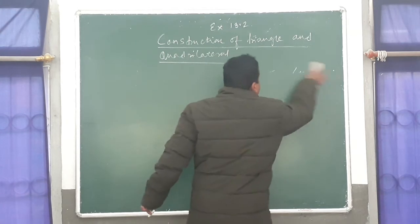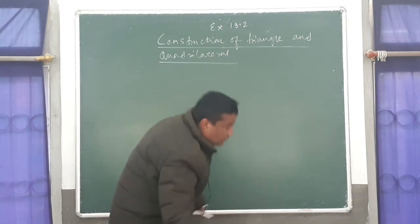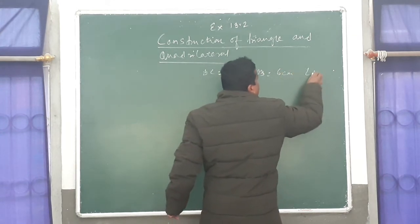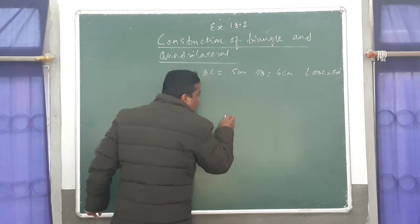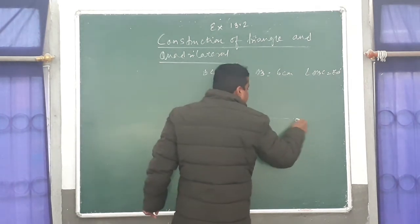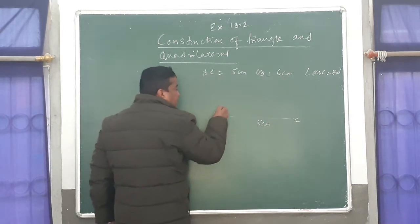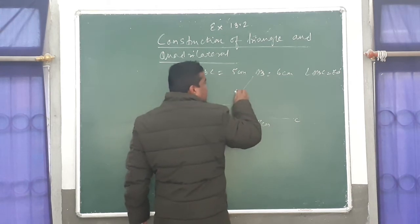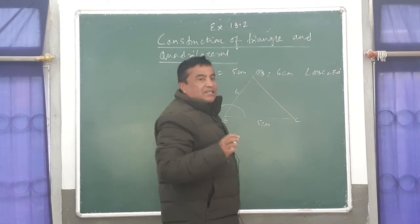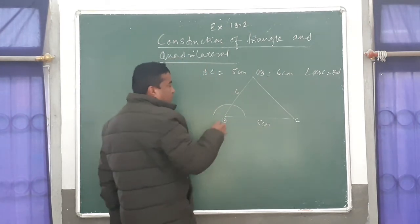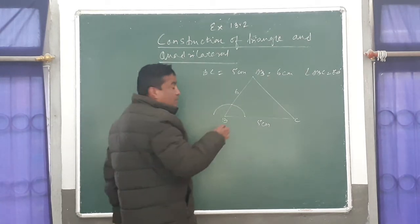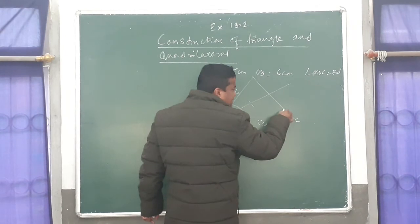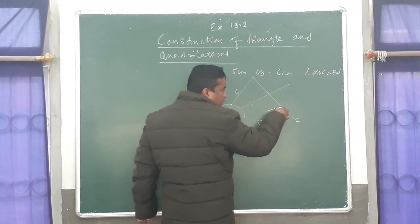Next is the incircle. Incircle means inside the triangle — it is difficult and important also. You can take the same values: BC is 5 centimeter, AB is 6 centimeter, angle ABC is 60 degree. First take BC which is 5 centimeter, angle B is 60 degree, AB which is 6 centimeter, and join it. For the incircle, you have to bisect any two angles. One angle is 60 degree — bisect it from here with an arc. Then bisect angle C: make one arc, cut it, and join it.